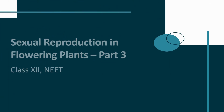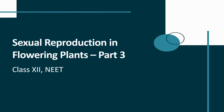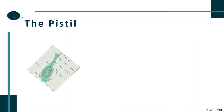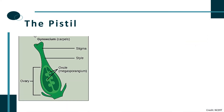Hello and welcome, dear learners. In this video we will be talking about female reproductive organs in flowering plants. We have already learned that the innermost whorl of a flower makes up the female reproductive part, known as gynoecium.